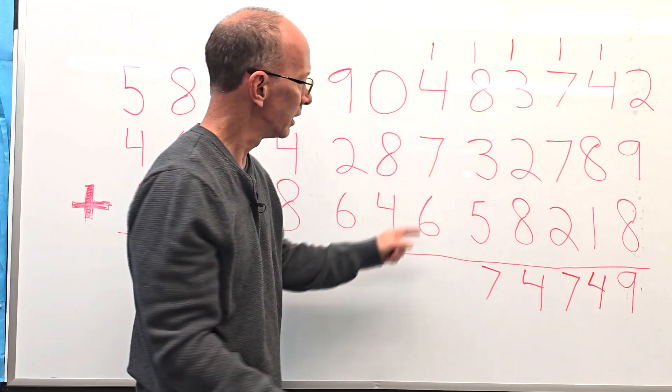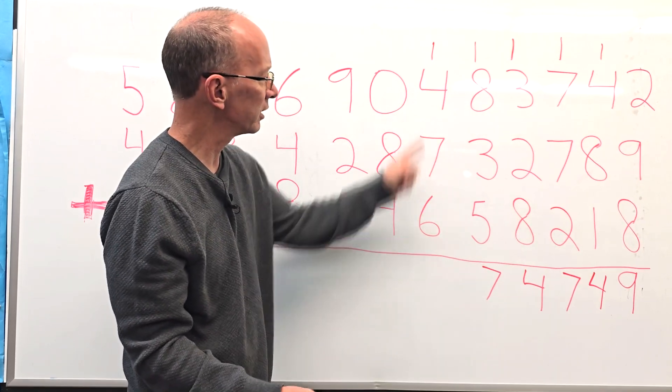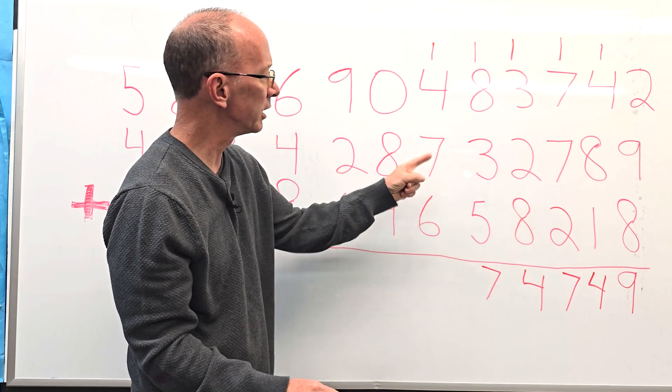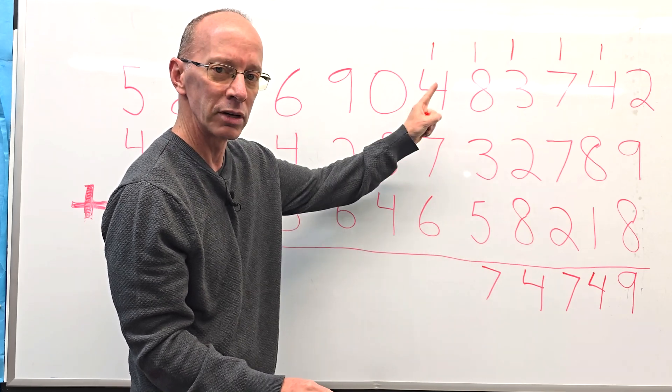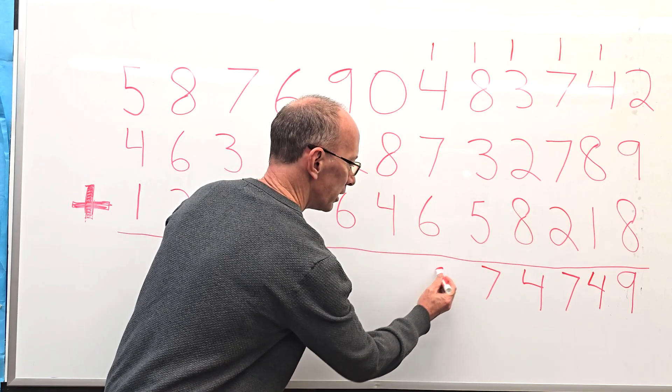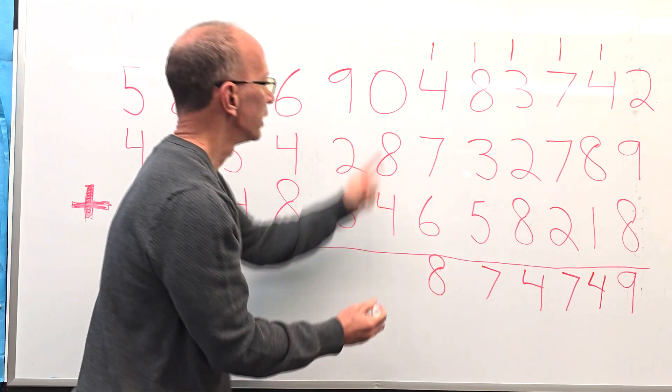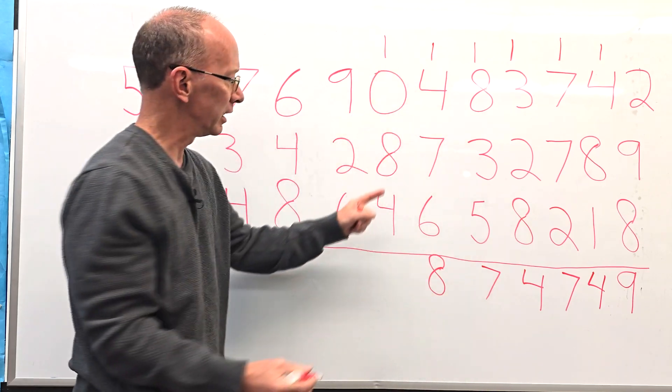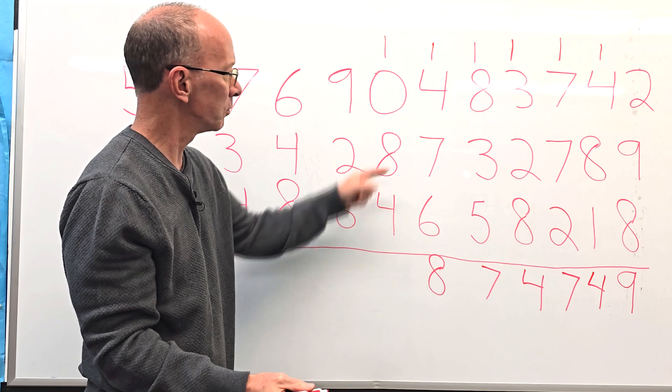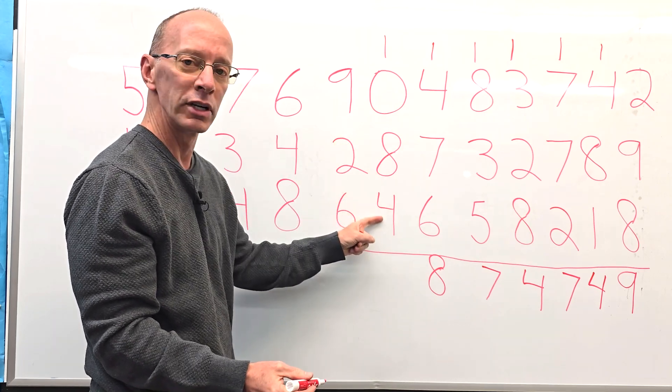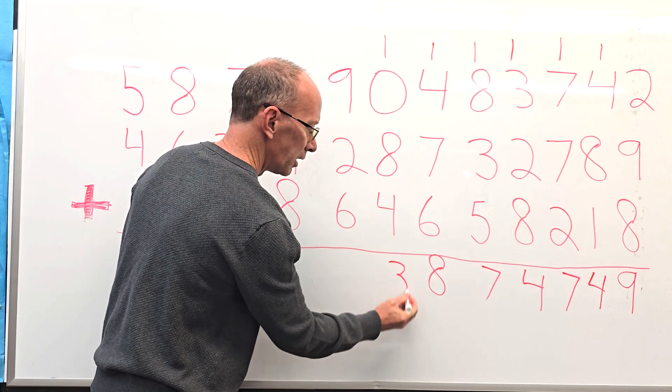Carry the 1 up here. And then I'm going to take 6 and 4 is 10, and then 10 plus 7 is 17, plus the 1, 18. I'm going to go ahead and put that right there. Carry the 1 up here. And then 8 plus 1 is 9, 9 and 4 is 13. Wow, this is a big number.